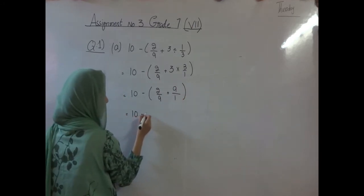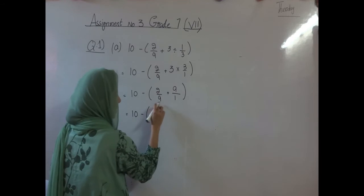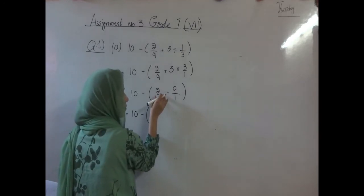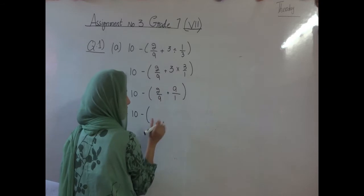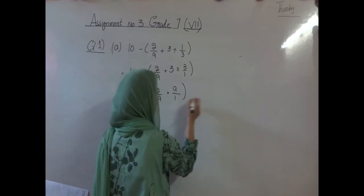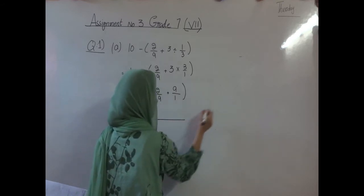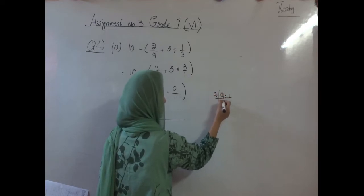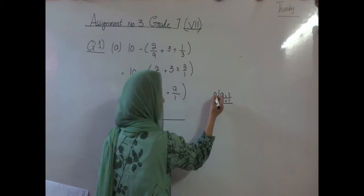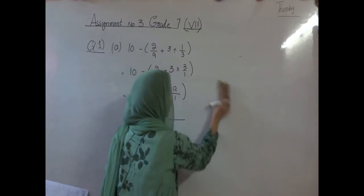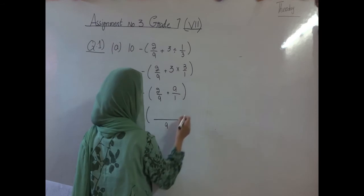Then 10 minus small bracket. Now we need to convert this small fraction into a longer fraction using the LCM method. How can we find the LCM of 9 and 1? The LCM will just be 9.